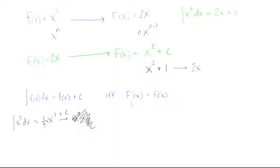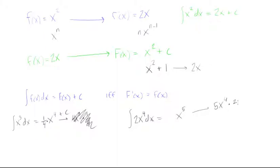Let's do more power rule examples. What if we had the integral of 2x⁴ dx? We raise the power by 1 to get x⁵. When we differentiate x⁵ we get 5x⁴, but we want 2x⁴. So we multiply by 2/5 — the 5s cancel and we're left with 2x⁴. The antiderivative is (2/5)x⁵ plus C.